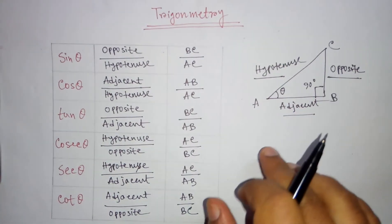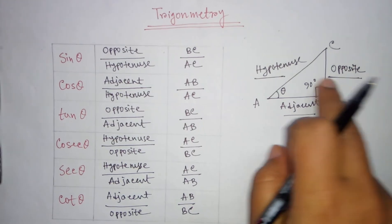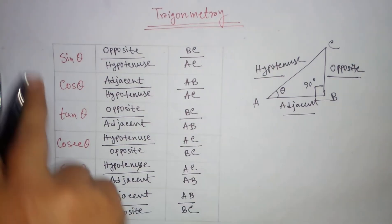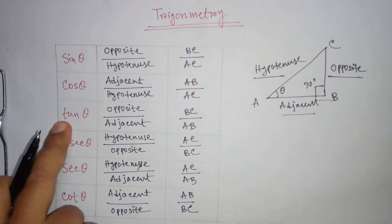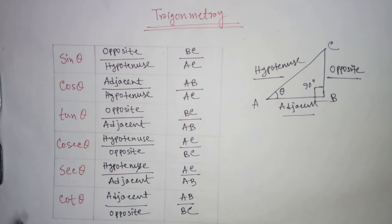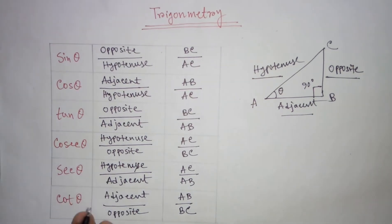If you know the values of adjacent, opposite, and hypotenuse of a triangle, you can easily calculate sin theta, cos theta, and tan theta. These are the main three. Now let's move on to cosec theta, sec theta, and cot theta.